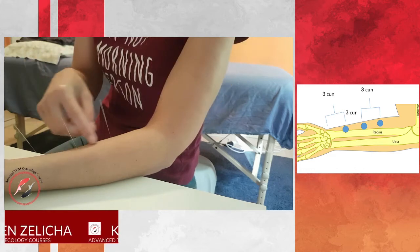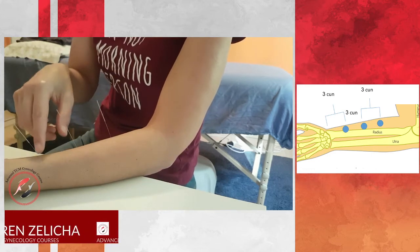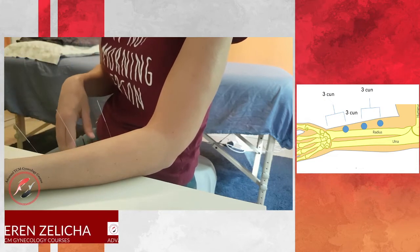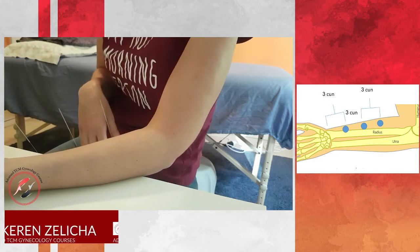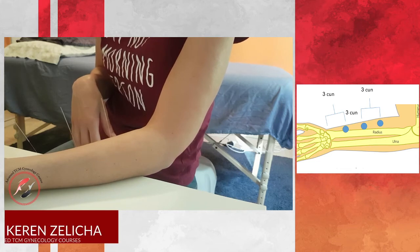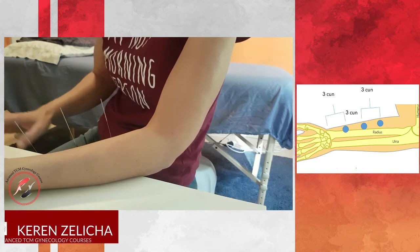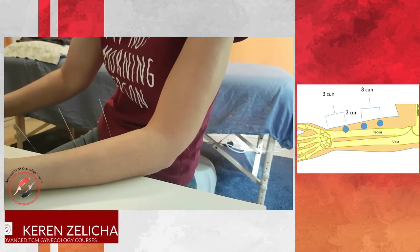If you want to influence lung meridian, you puncture, as I said, superficially. If you want to influence heart issues, you puncture more deep about a tsun. So for lung issues, you puncture about half a tsun.